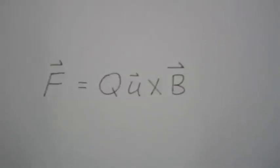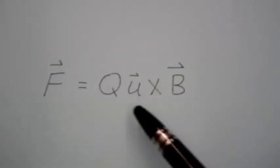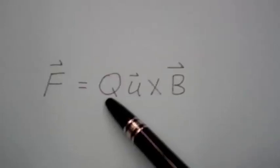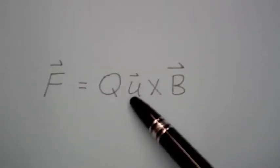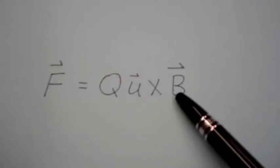A charged particle moving in a magnetic field will experience a force, and that force is given by the product of the charge with the cross product of the velocity of the particle and the magnetic flux density.